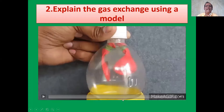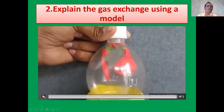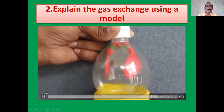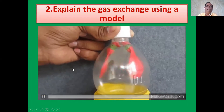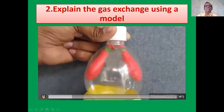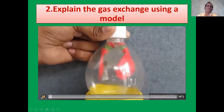He explained the gas exchange using this model. In your book, you studied the material needed to make this model: the balloon, Y-tube (the shape of the tube is Y), and the rubber balloon, and the jar — bell jar, or as somebody said, glass jar. This is the model to explain gas exchange in our lungs.